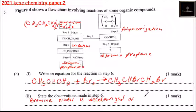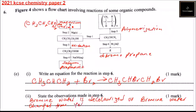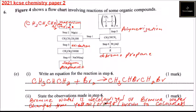State the observation. This is a test of bromine water — bromine water is decolourized, or bromine water changes from yellow, orange, or brown to colorless. The color (yellow, orange, or brown) will depend on the concentration of the bromine water.